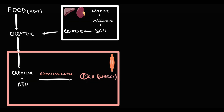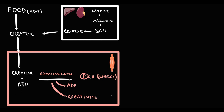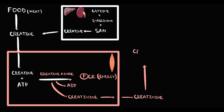But also two byproducts are formed: ADP and creatine. The problem with creatine is that it is a completely useless product. We cannot use creatine for any useful purpose, so our muscles do not need it. Because of this, muscle tissue secretes creatine into the blood, where it circulates.